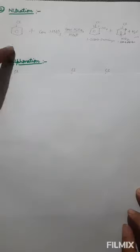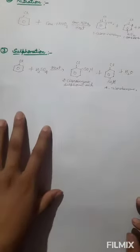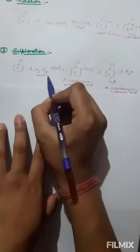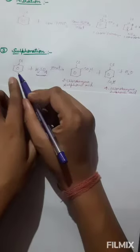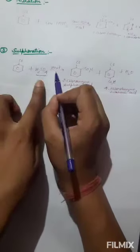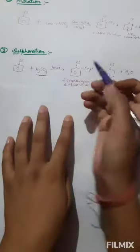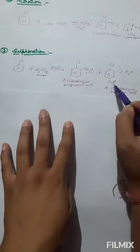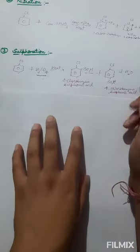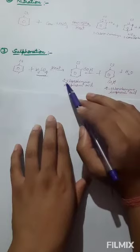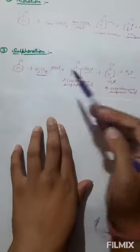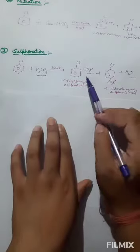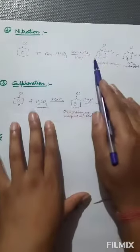The next electrophilic substitution reaction is sulfonation. Sulfonation takes place in the presence of sulfuric acid. When H₂SO₄ reacts with chlorobenzene on heating, two compounds are formed: 2-chlorobenzenesulfonic acid at the ortho position and 4-chlorobenzenesulfonic acid at the para position, with removal of water. The electrophilic group for sulfonation is SO₃H, and for nitration it is NO₂.